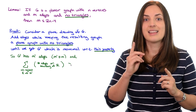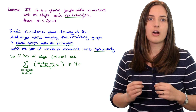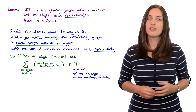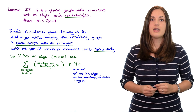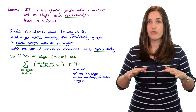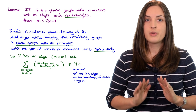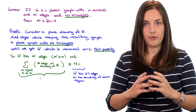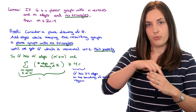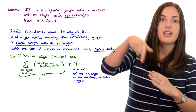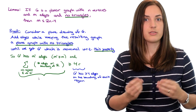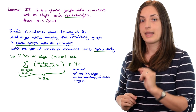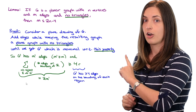If we consider the sum over all regions in the drawing of G prime of the number of edges on the boundary of each region, we get something that is at least four times r, where r is the number of regions. This is because G prime has no triangles, so every region has at least four edges on its boundary. The sum on the left-hand side is counting all edges on boundaries.